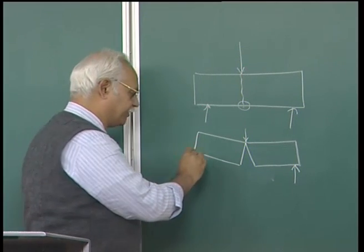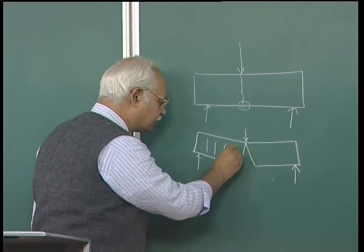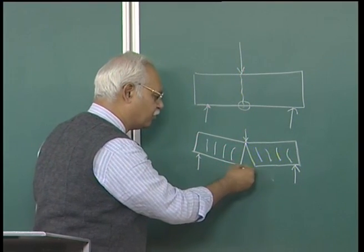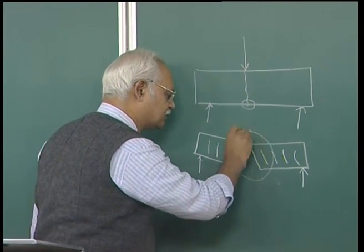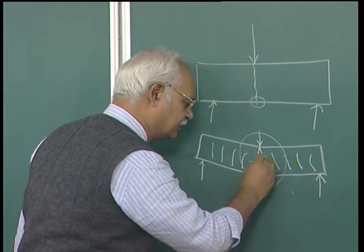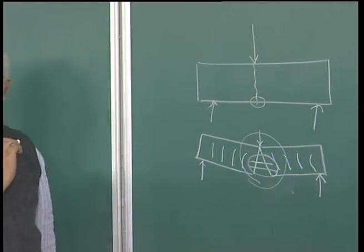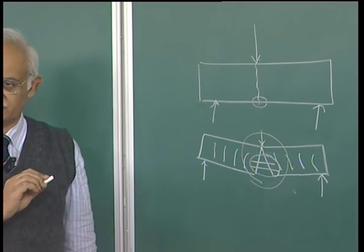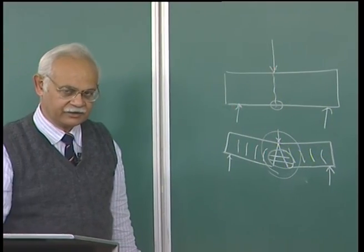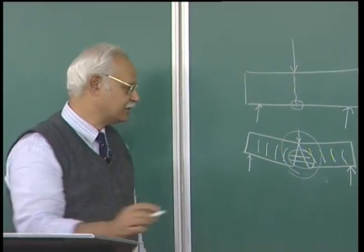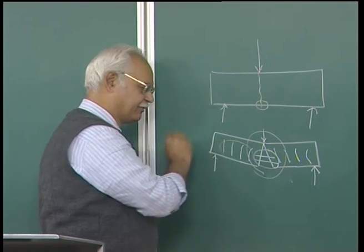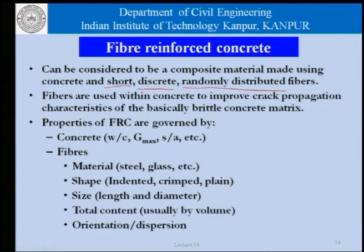For example, if all the fibers in the matrix were oriented in one direction, there would be no reinforcement in the other direction. So we must make an assumption — and for normal fiber reinforced concretes, we assume all fibers are distributed in all three directions. The fibers are used within the concrete to improve the crack propagation characteristics of the basically brittle concrete matrix.